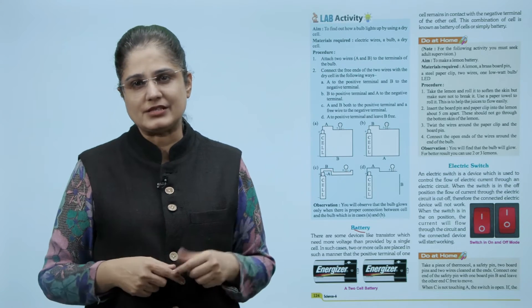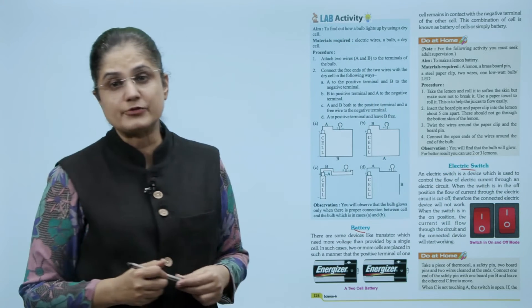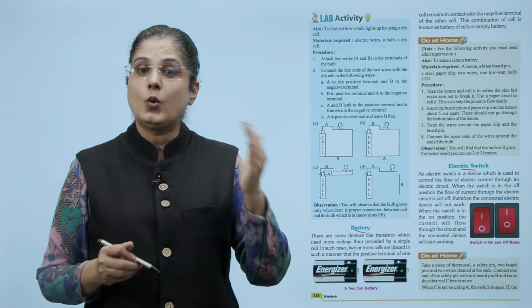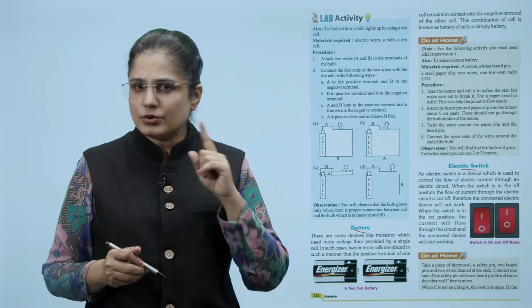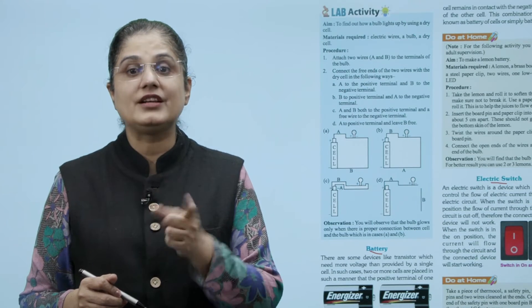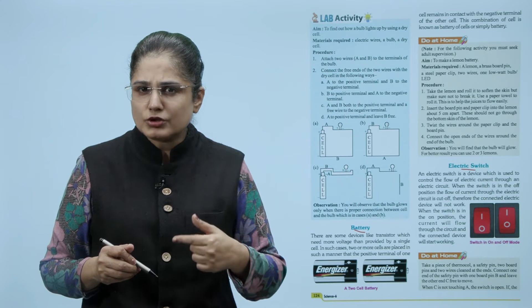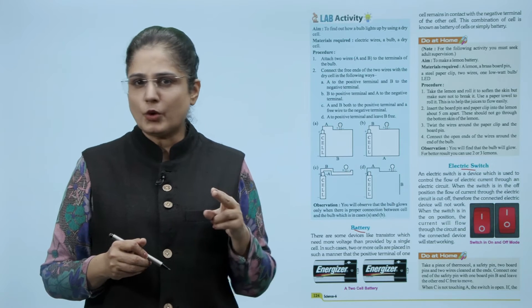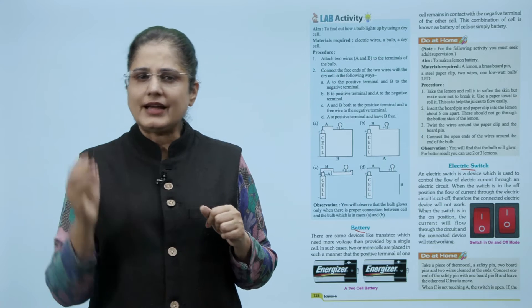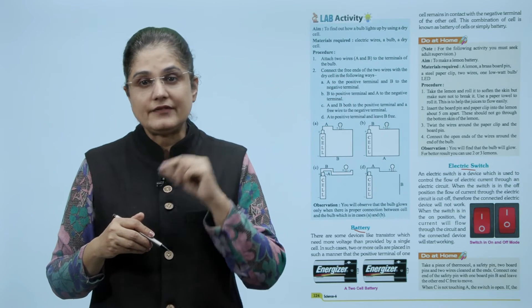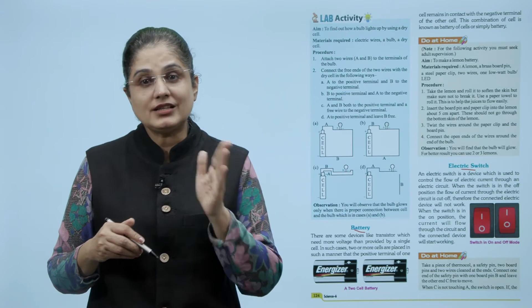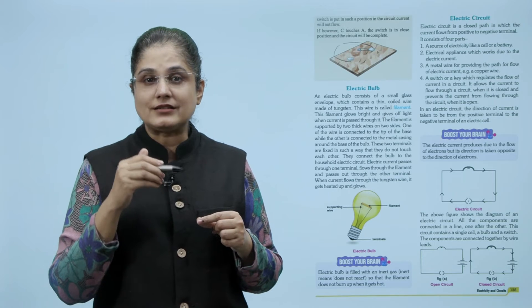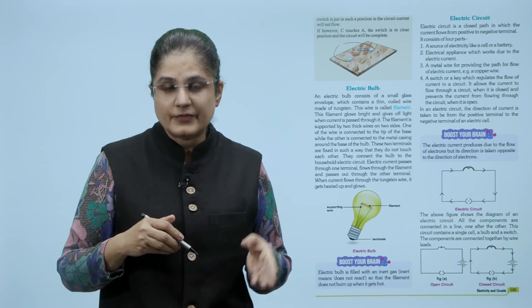Let us now look at an electric switch. An electric switch is a device which is used to control the flow of electric current through an electric circuit. When the switch is in the off position, the flow of current through the electric circuit is cut off, therefore the connected electric device will not work. When the switch is in the on position, the current will flow through the circuit and the connected device will start working. Now take a piece of thermocol, a safety pin, two board pins and two wires cleaned at the ends. Connect one end of the safety pin with the board pin B and leave the other end C free to move. When C is not touching A, the switch is open. If the switch is put in such a position that the circuit current will not flow. If however C touches A, the switch is in the closed position and the circuit will be complete.